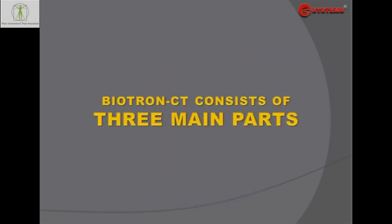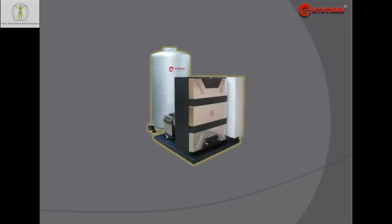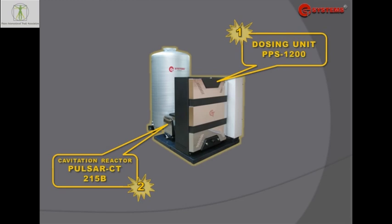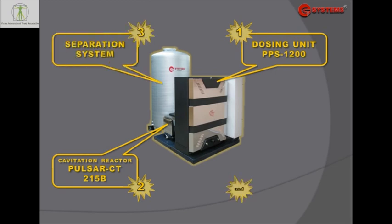Biotron CT System consists of three main parts: a dosing unit, pre-processing system, cavitation reactor Pulsar CT, the separation system, and the electric cabinet with the PLC.